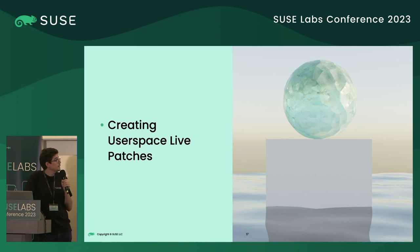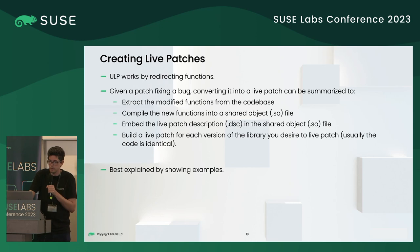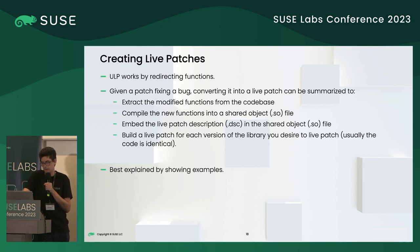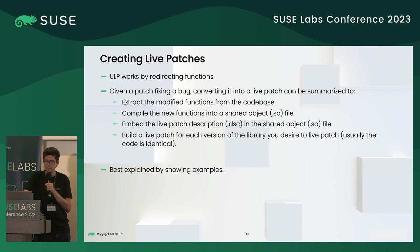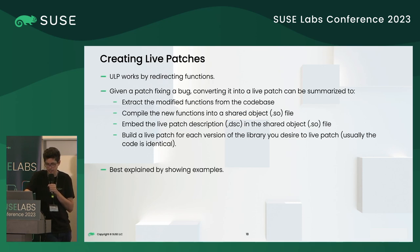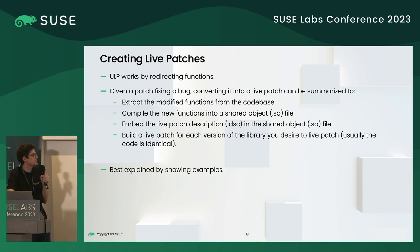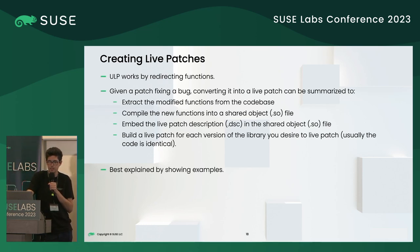To create userspace livepatches: since ULP works by redirecting functions, if you have a normal patch you can convert it to a livepatch by following these steps. First, extract the modified functions from the codebase and create a shared object with those functions. Then create a livepatch description file, embed it into the shared object file, and build a livepatch for each version of the library you want to patch. If you have multiple versions of OpenSSL, you need to create a separate patch for each one.